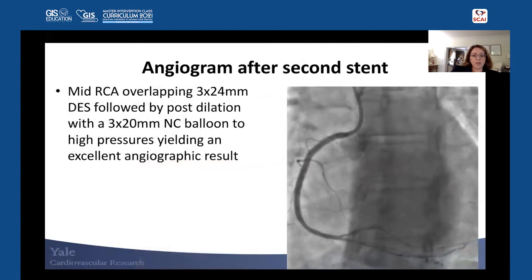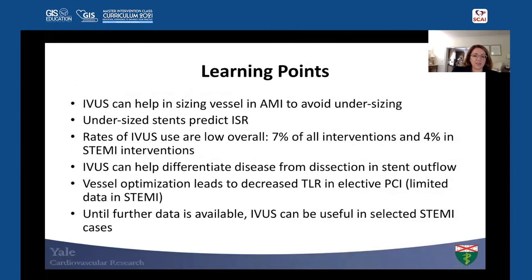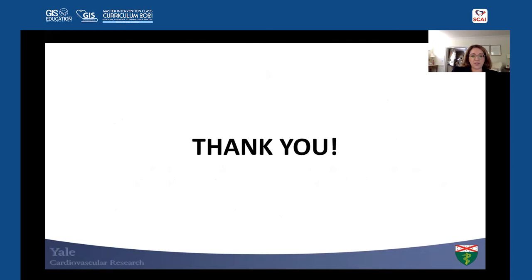Learning points from today: IVUS can help in sizing vessels in AMI to avoid undersizing — undersized stents predict ISR. Rates of IVUS use are overall low: 7% of all interventions and 4% of STEMI interventions in US samples. IVUS can help differentiate disease from dissection and optimize stent outflow. Vessel optimization in general leads to decreased TLR in elective PCI, although there is limited data in STEMI specifically. Until further data is available, IVUS can be useful in selected STEMI cases. Thank you.